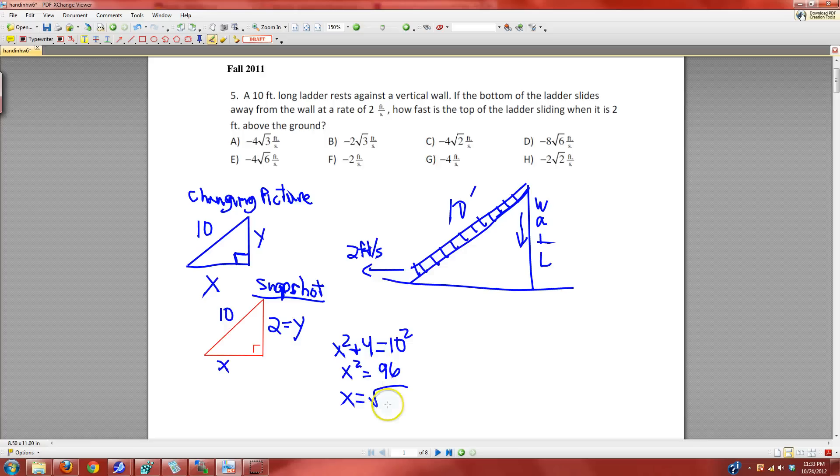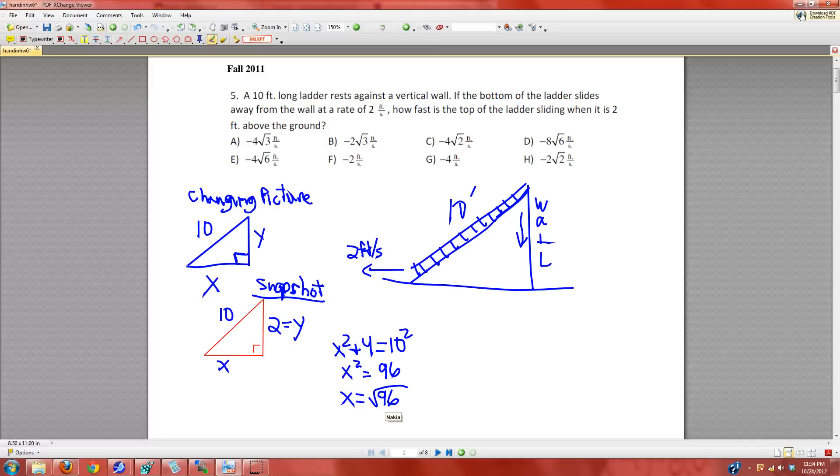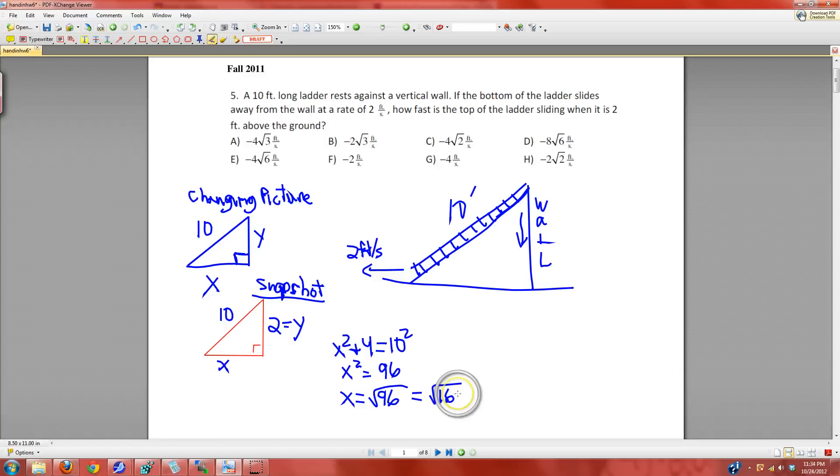That has a perfect square that goes into it. The biggest perfect square that goes into it is 16. I think this is 16 times 6. So we get 4 root 6. That's what x is.